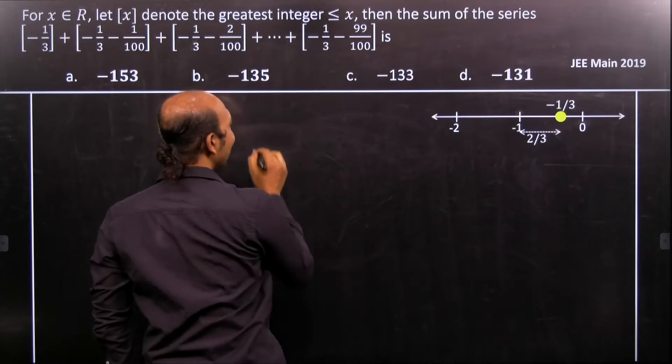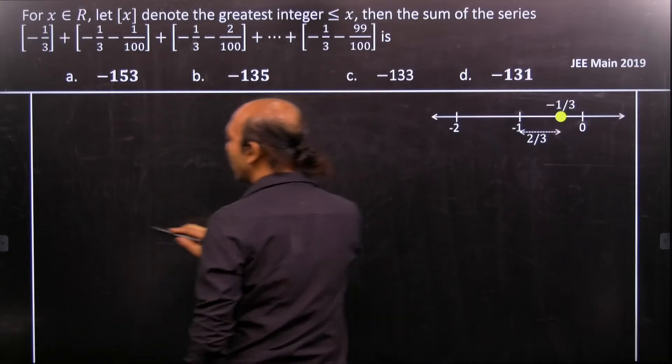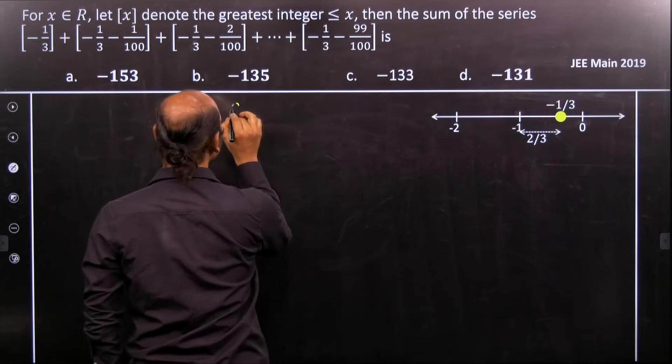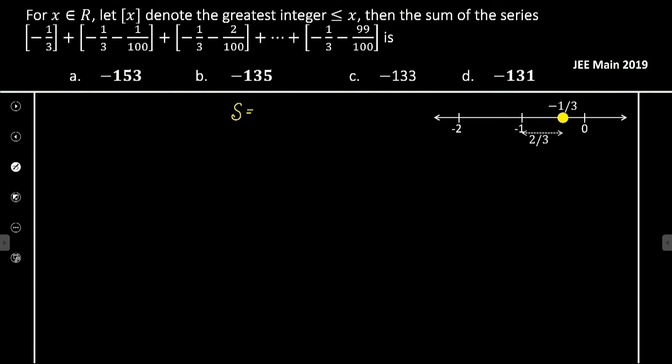We can easily find out that the sum can be written as the summation of minus 1 by 3 minus n by 100.